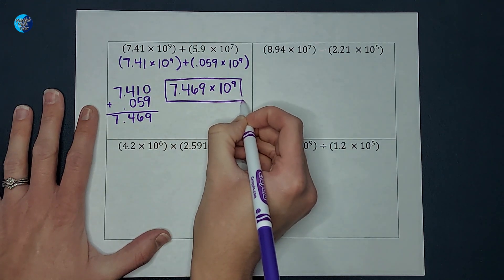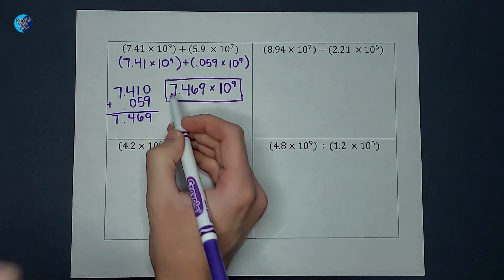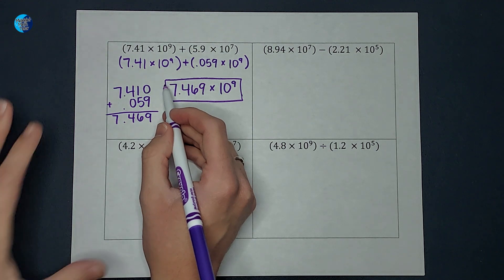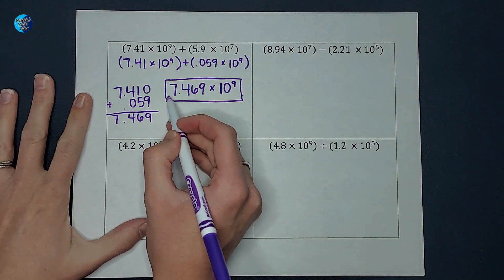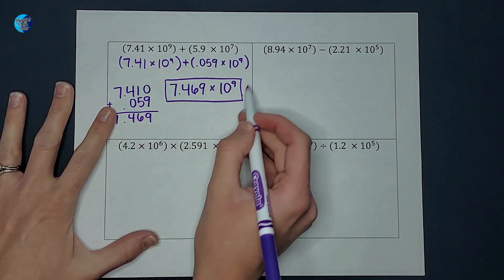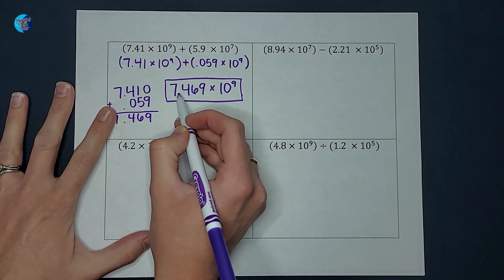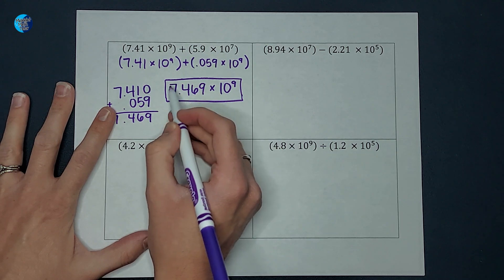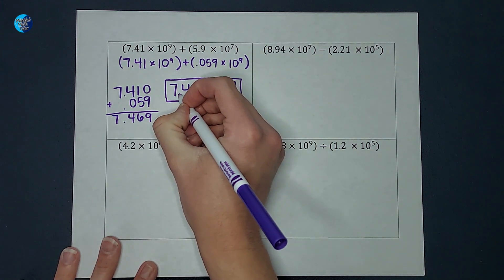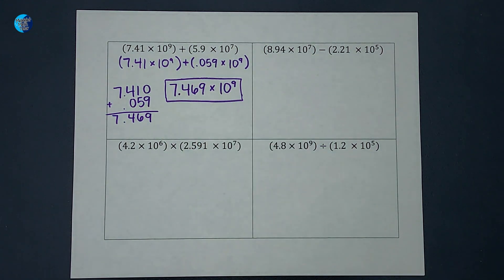Now if I had ended up with a number like 17 or something, I would want to adjust so there's only one number in front of the decimal for it to be truly in scientific notation form.